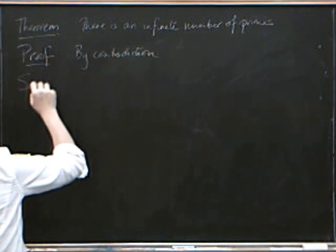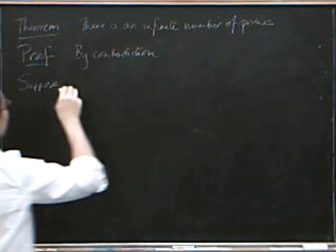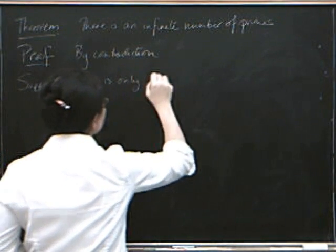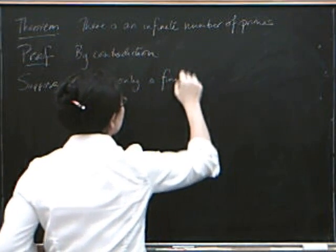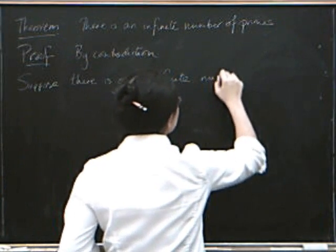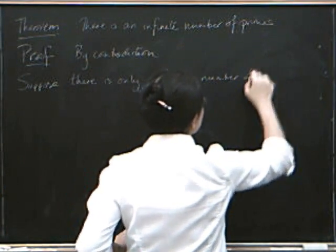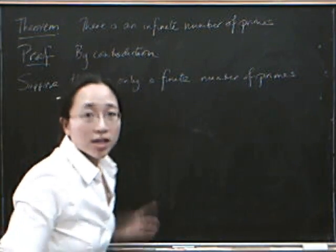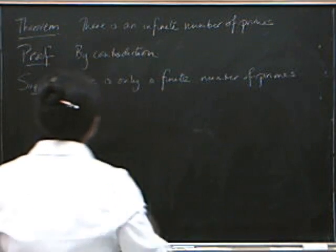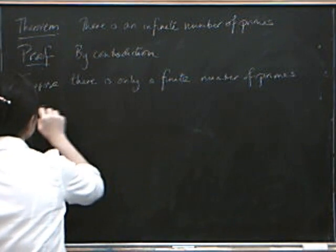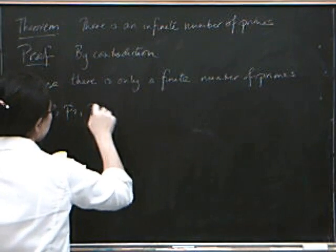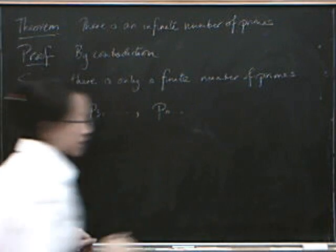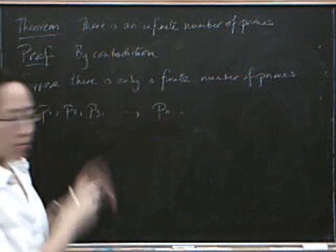So we suppose there's only a finite number of primes. That is, only a finite number of primes. And if there's a finite number of them, we can just write them all down in a row, right? So supposing that these prime numbers are called p1, p2, p3, all the way up to pn. And that's it. Okay, so those are all the prime numbers.